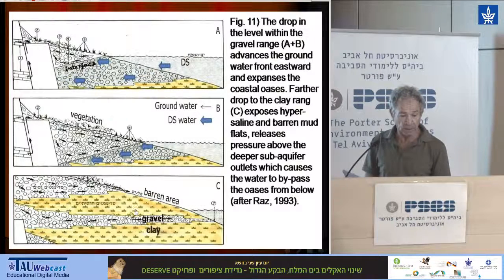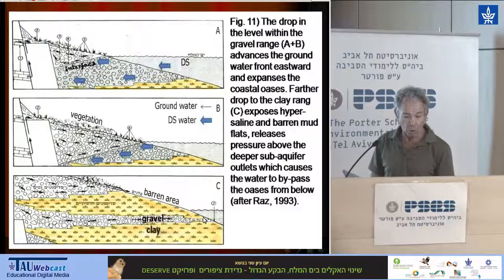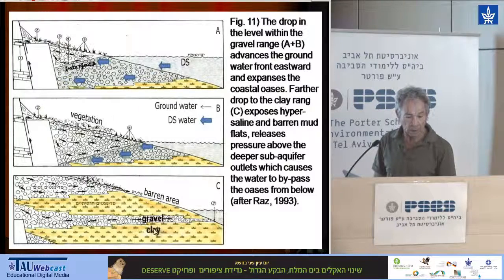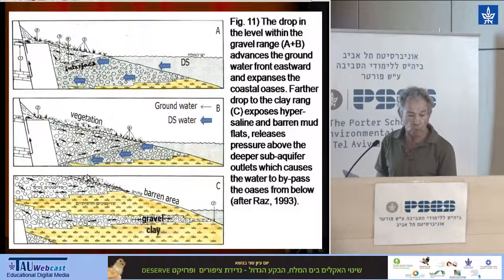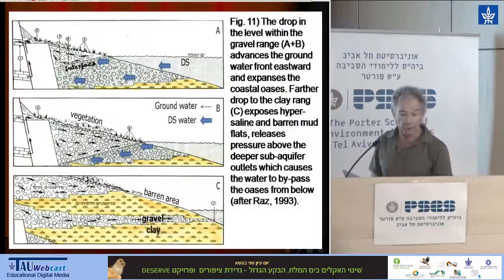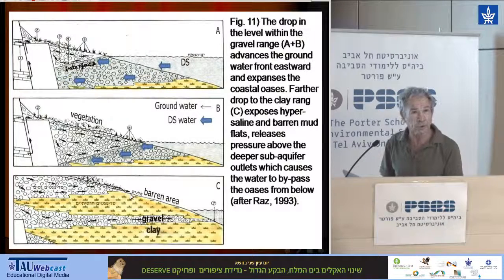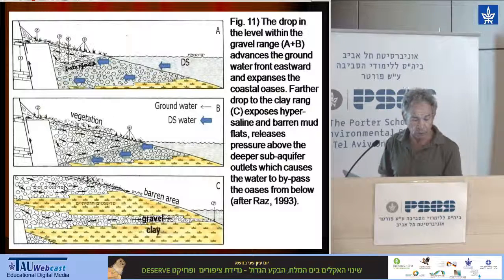Another problem is that sub-aquifers were blocked and prevented from flowing water to the lake because of the pressure of the water column above. But after the drop in the level, the pressure is much lower and water can be released from sub-aquifers, bypassing the reserves from below — which is, of course, another very negative impact. We are witness today to an enormous change in the variety of species, and who knows what the continuation of these changes will be.